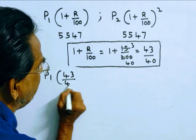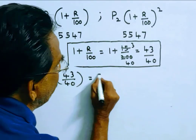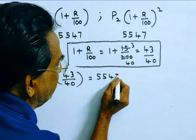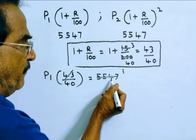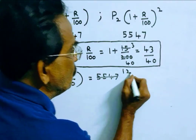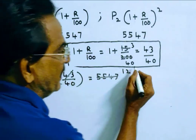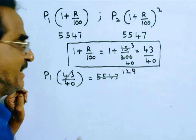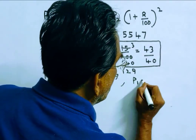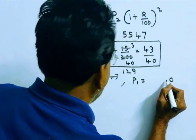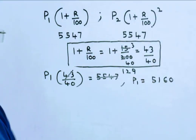So P1 into 43/40 equals the first installment value, which is 5,547. Solving this gives us P1.